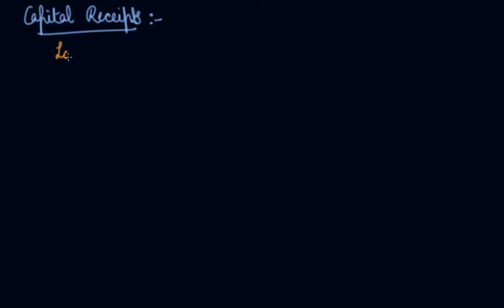What are capital receipts? If the government takes a loan, what will happen — the government is getting money. But if the government is taking a loan, it is creating a liability on the government. So the government is taking loan to spend and fulfill its expenditures, but in the meanwhile it is creating a liability. These are the capital receipts of the government.